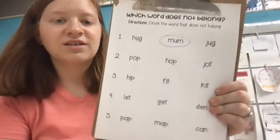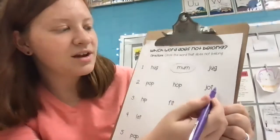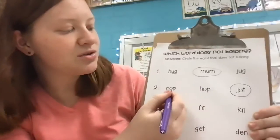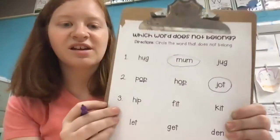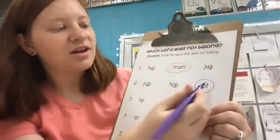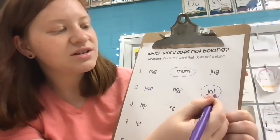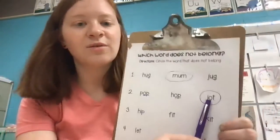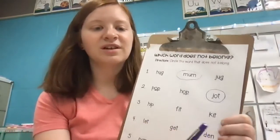All right, go ahead and point to the one you think does not belong. If you said jot, you are correct. The other two, pop and hop, have 'op' as their middle ending sound, which makes them rhyming. And our word jot has 'ot,' so the other words have 'op' and this one is different because it has 'ot.' So we circled it and kicked them out.